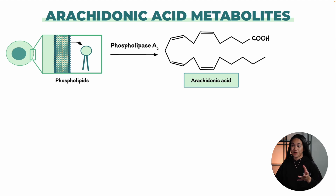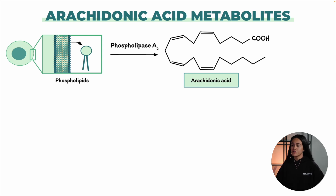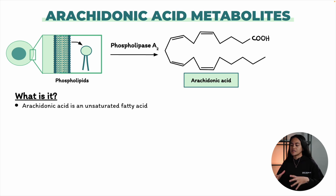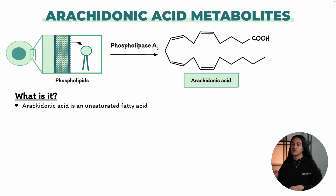Let's talk about arachidonic acid and how it's connected to different processes in the body. First of all, what is it? Arachidonic acid is a type of fat, specifically an unsaturated fatty acid that's mostly found in the membranes. Its importance isn't about what it does on its own, but how it acts as a starting material — a precursor — to produce a family of mediators called eicosanoids.